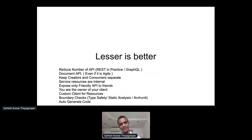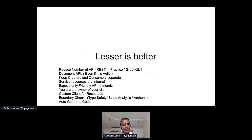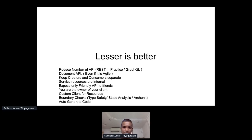In security, the less you expose, the better. Reduce the number of APIs — it's not about making 20 or 30 APIs, it's about making good, meaningful ones. Document your APIs — agile doesn't mean no documentation. Keep creators and consumers separate — if you are an API consumer, do not consume your own API. Service resources are internal — do not expose databases to the outside world directly. If you want to expose data, expose it through a service. Expose only friendly APIs to friends.